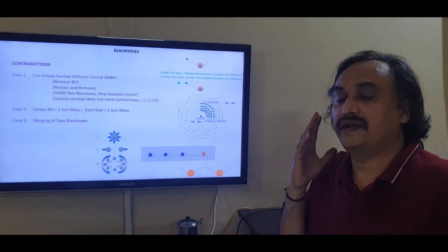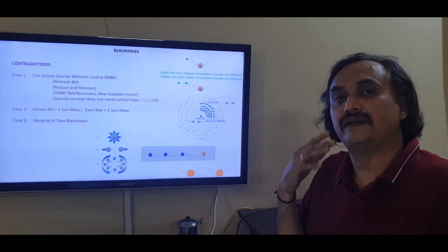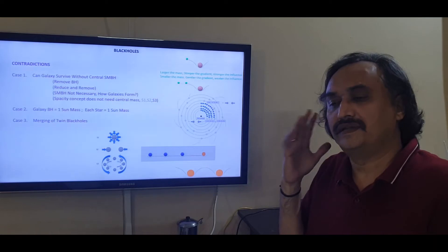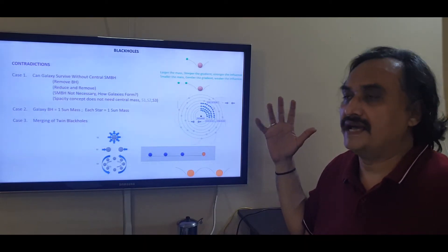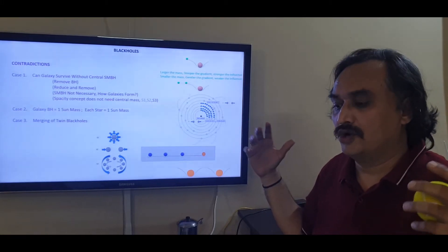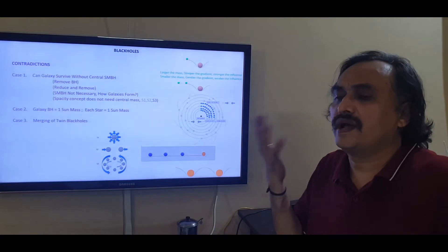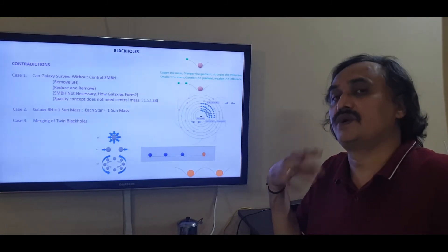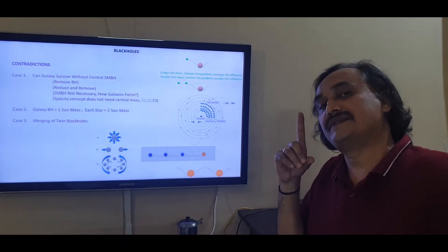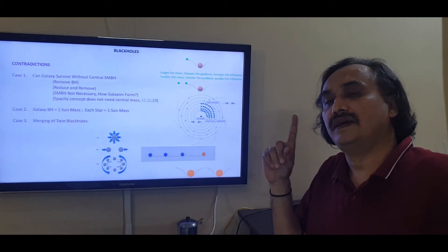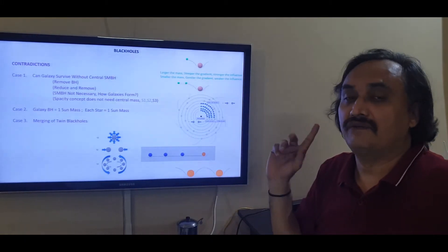Let us now cut it into half, 2 million sun masses, the supermassive black hole. Again the stars are not flying away, the galaxy is not disintegrated, but now the size of the galaxy is supersized. Because the influence is less, but the galaxy has not disintegrated. You can keep doing this till you come to a situation where the black hole at the center is just one sun mass. Even then the stars would be going around. They would not be flying away.